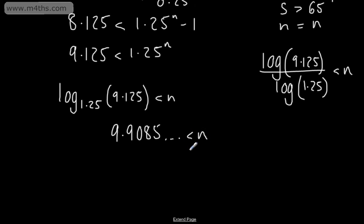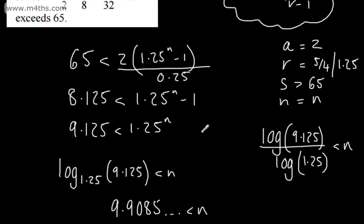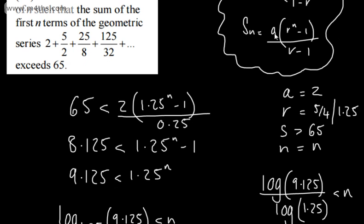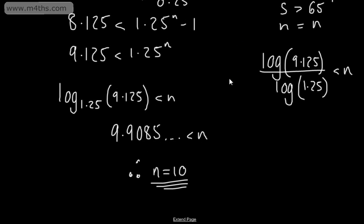n has got to be greater than this. Therefore, the least value of n, n will be 10. So, all I've done is set this up, used our formula, and as stated, you could have used this one, and we found the least value of n.